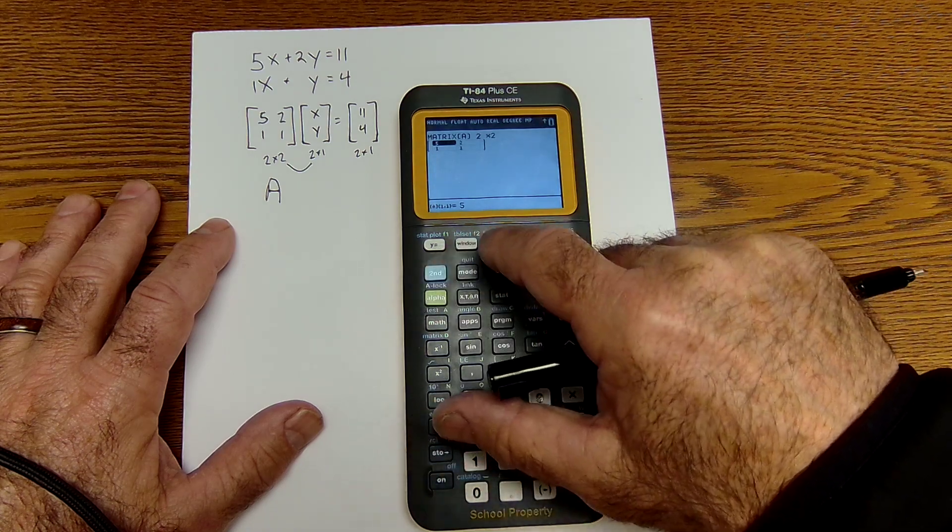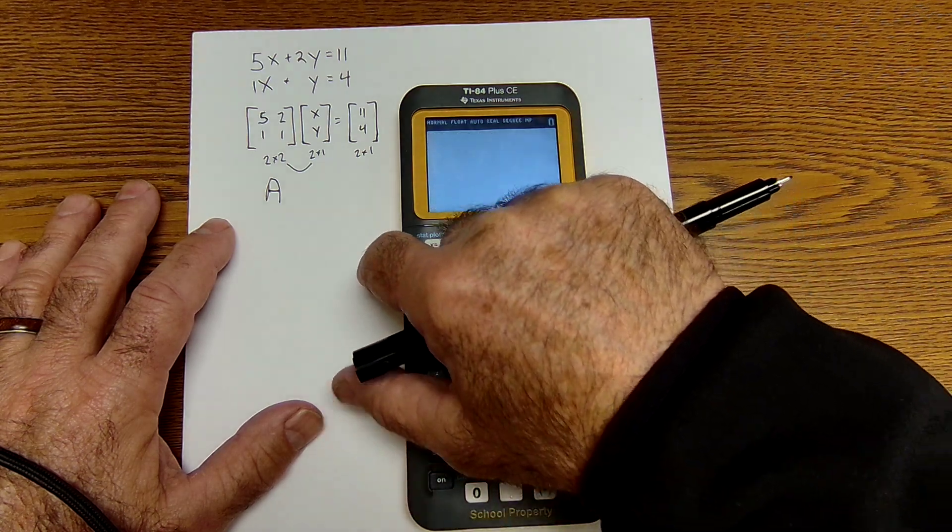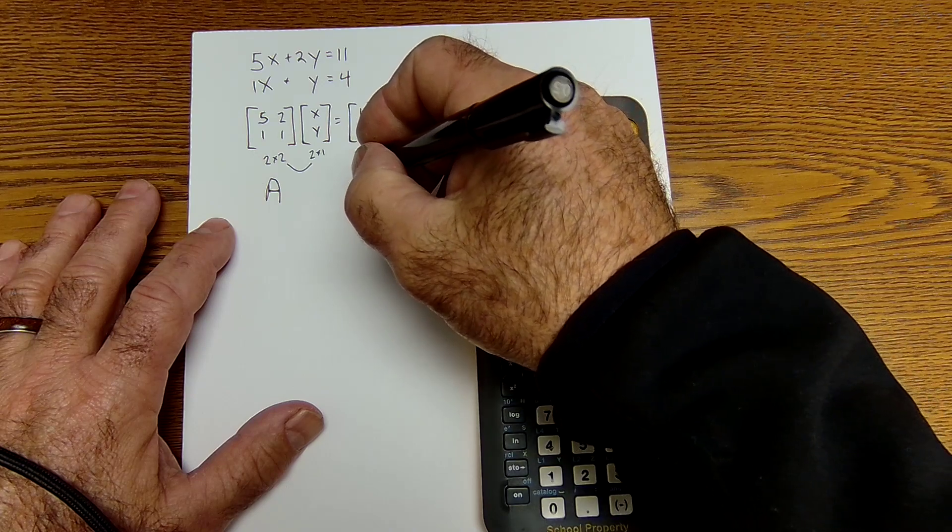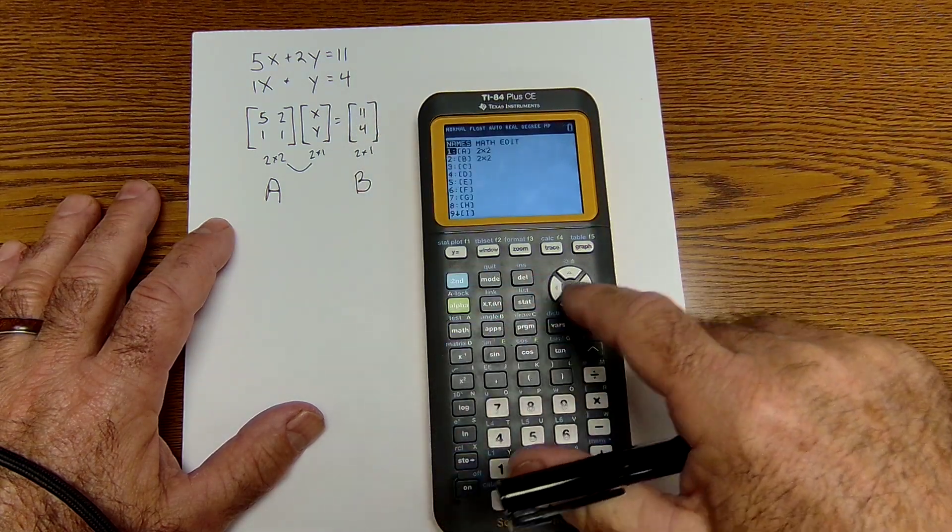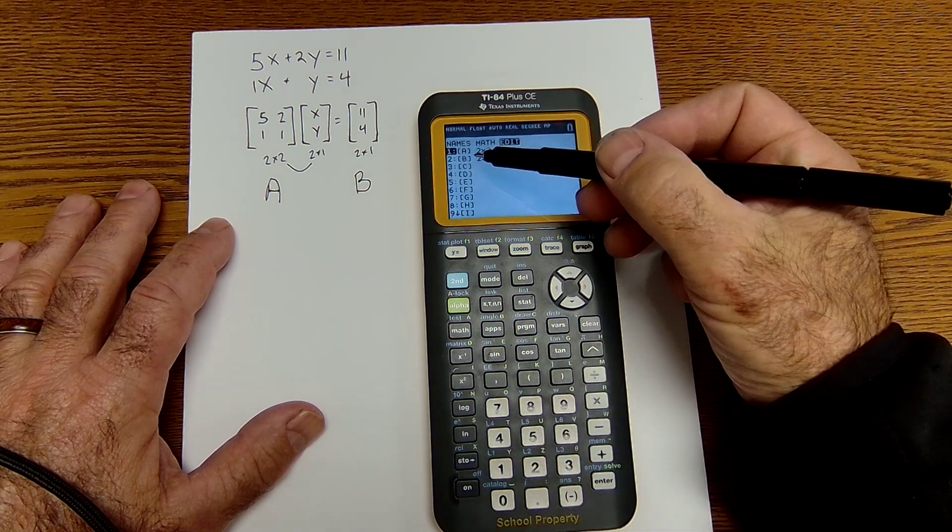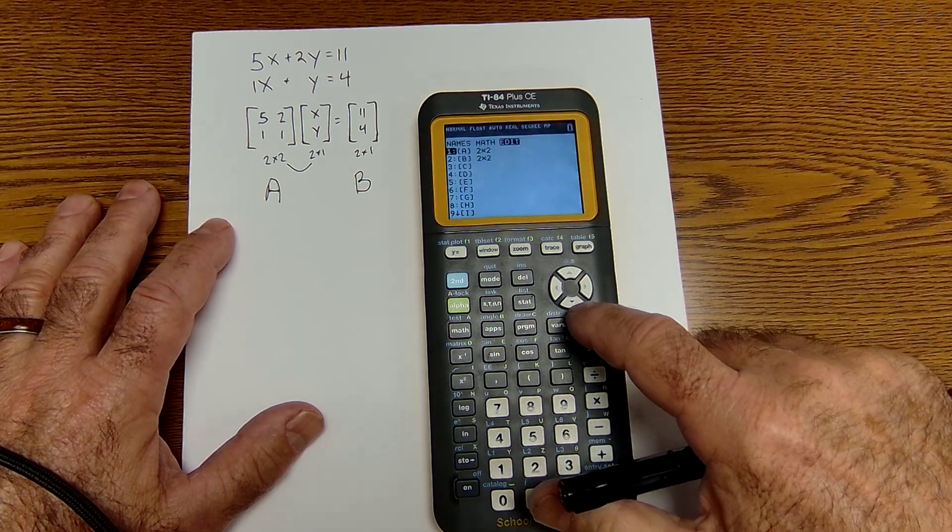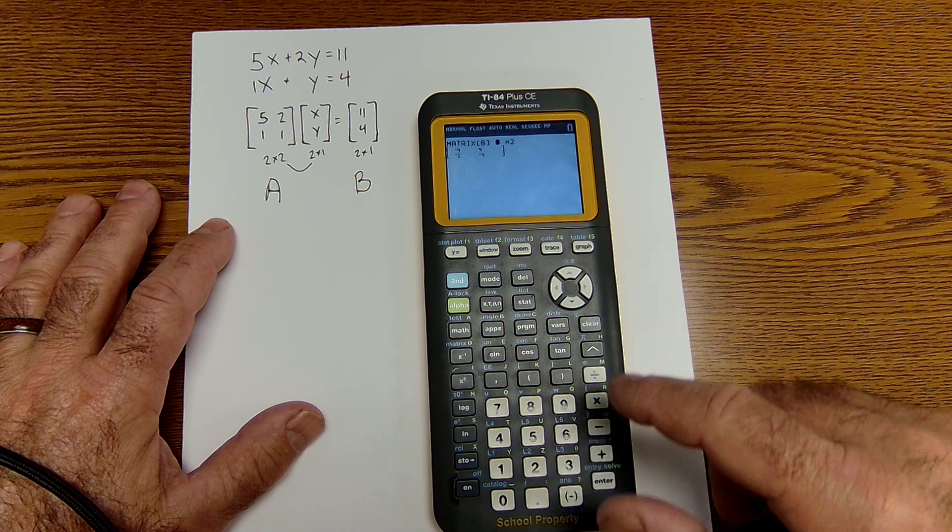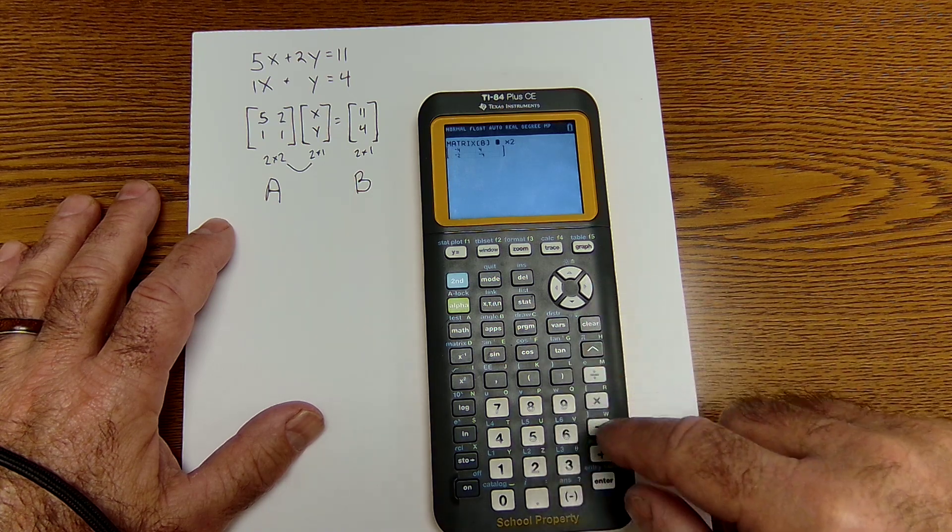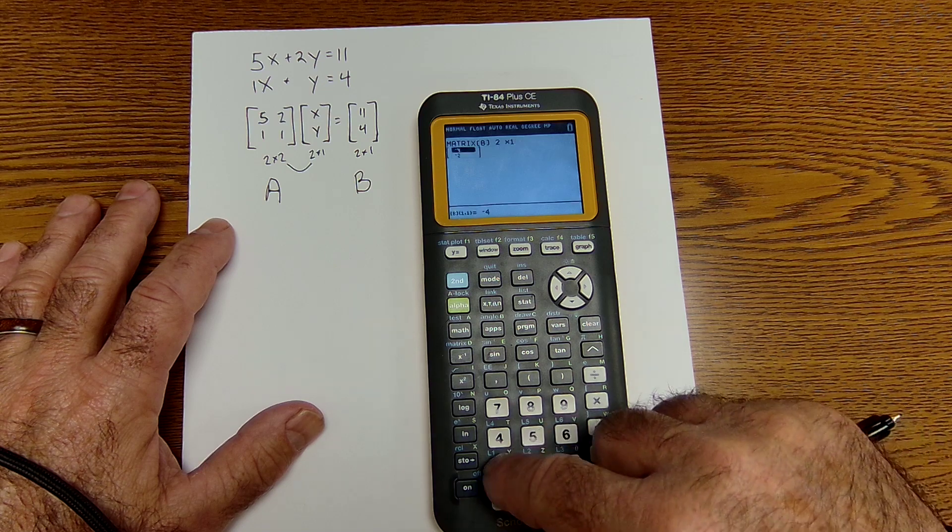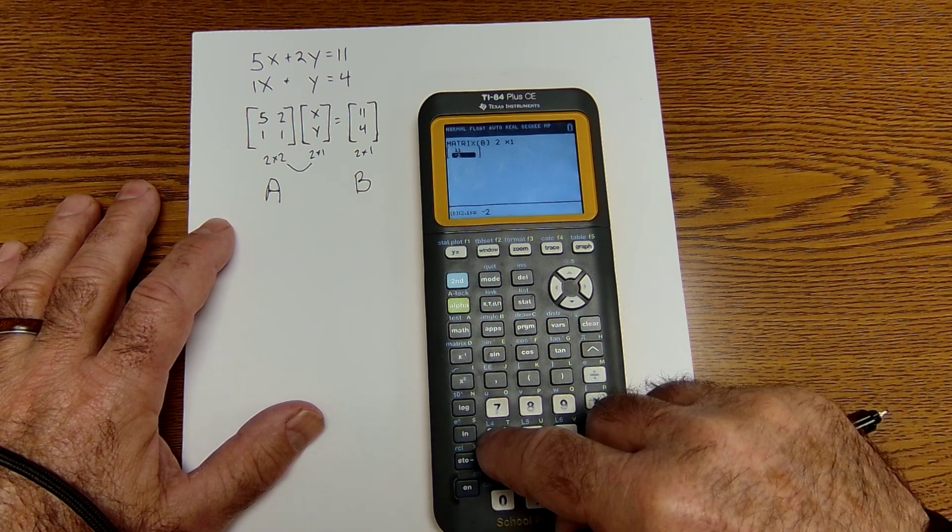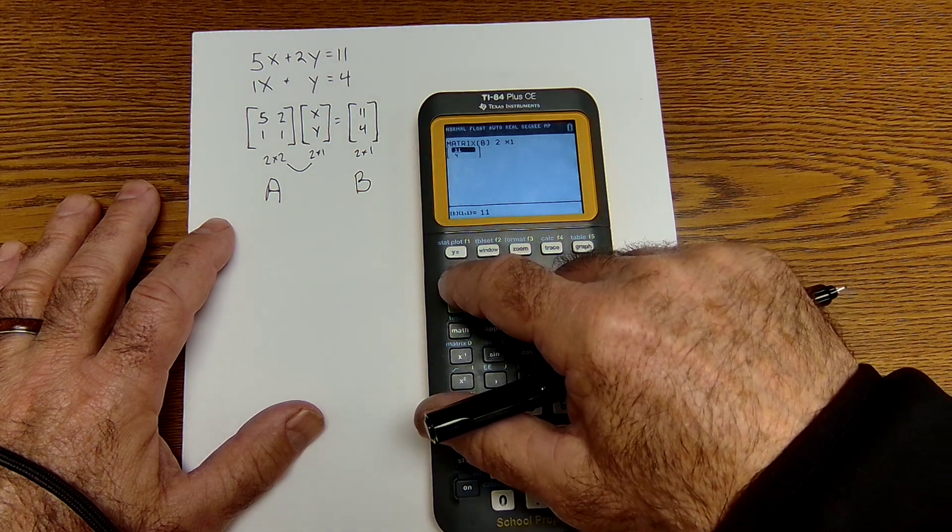Now I could quit. And then I'm going to call this solution matrix here B. So I'm going to go back to matrix, over to edit. I want to edit the second matrix now. So I could scroll down to 2, or I could enter the number 2. This matrix is a 2 by 1, and the values are 11 and 4. Again, I'm going to quit.